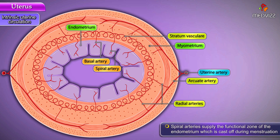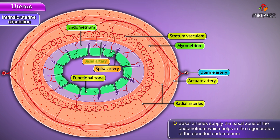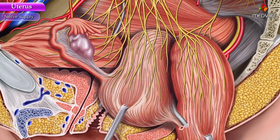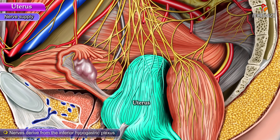Spiral arteries supply the functional zone of the endometrium, which is cast off during menstruation. Basal arteries supply the basal zone of the endometrium, which helps in the regeneration of the denuded endometrium.